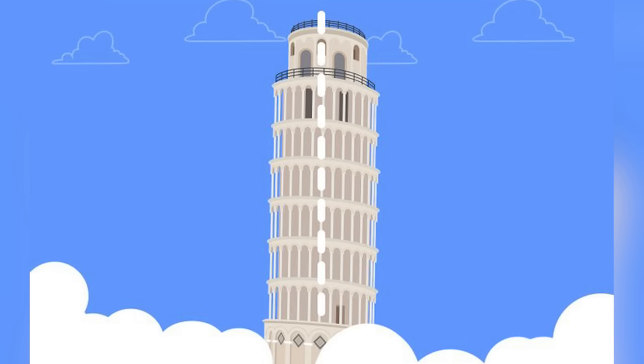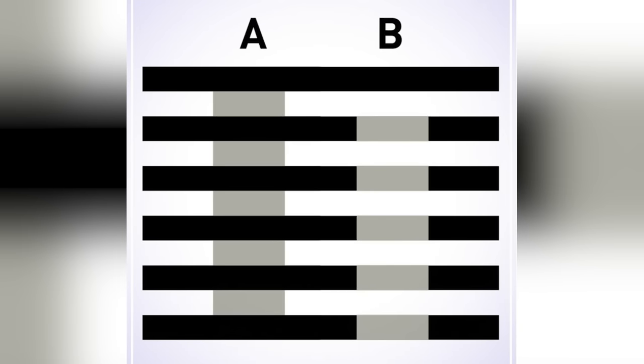Are you able to tell which rectangle is darker — rectangle A or rectangle B? Comment down below which one you think is darker; take your time. Well, if you believed A was darker you're wrong, and if you believed B was darker you're also wrong, because A and B are the exact same color. The surrounding black and white bars trick our minds into thinking A is much darker, but they are identical. Crazy, right?